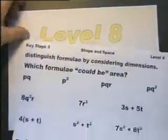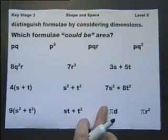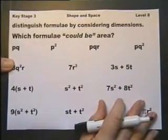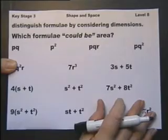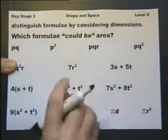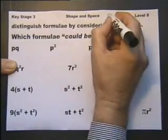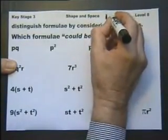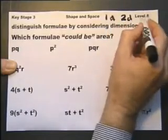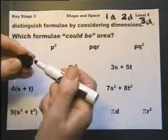The first thing could arguably be under algebra, but anyway, distinguish formally by considering dimensions. So which of these formally could be area? Now what do we mean by dimensions? Well we need the first dimension, the second dimension, and three dimensions. That is what we mean by the dimensions.